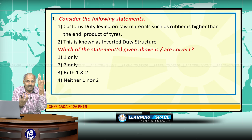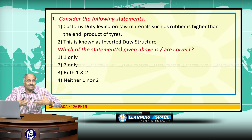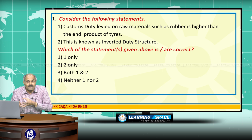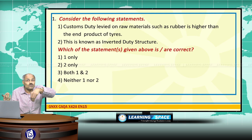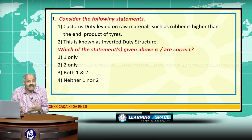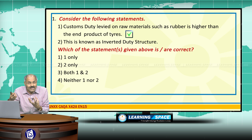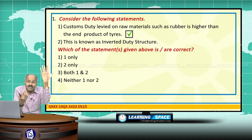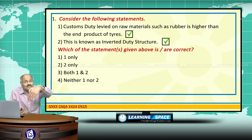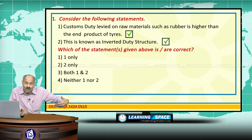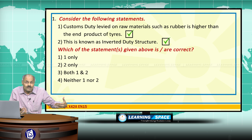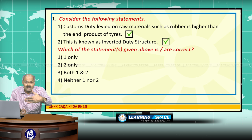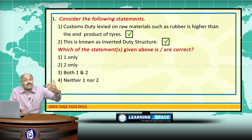When customs duties on raw materials are more, then ultimately our domestic industry will become unviable and imported finished products may become cheaper than goods produced in our country. For example, tires manufactured in our country are becoming costlier than imported tires, because the customs duty imposed on rubber is much higher compared to the import duty on finished tires. This is called the inverted duty structure.